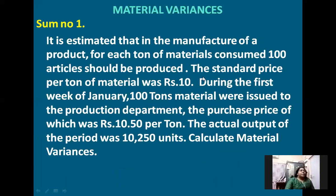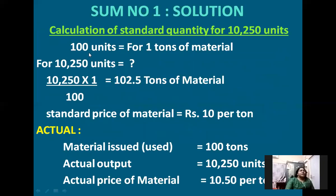Again, look at the problem. What information is available? The standard price of material is rupees 10 per ton. During the first week of January, 100 tons of material were issued to the production department, and the purchase price was 10.50 per ton. We are going to use this information to work out the standard quantity. For 100 units we use 1 ton of material, so for 10,250 units, by cross multiplication — 10,250 into 1 divided by 100 — we get 102.5 tons of material needed.